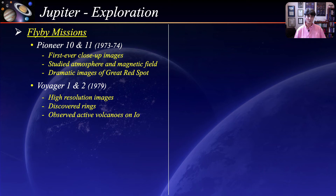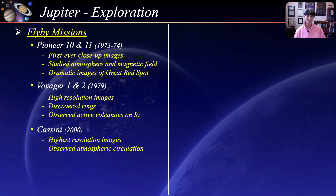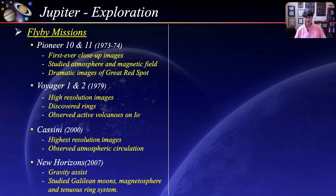The Cassini spacecraft flew by Jupiter in 2000 on its way to Saturn. During its flyby it provided some of the highest resolution images ever taken of the planet and made detailed observations of Jupiter's atmospheric circulation. The New Horizons spacecraft flew by Jupiter in 2007 on its way to Pluto and the Kuiper Belt. In addition to receiving a gravitational assist, it studied the Galilean satellites, Jupiter's magnetosphere, and its tenuous ring system.